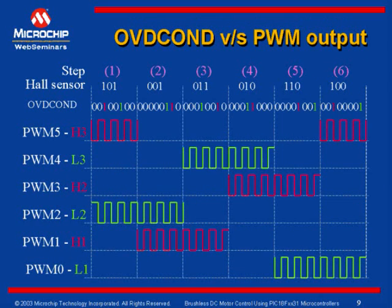Now let us see how PWM can control the motor, or how speed can be controlled using the PC-PWM module. The PC-PWM module has a feature of overriding the PWM outputs. Based on the value in a register called OVDCOND, or override control register, when the corresponding bit is set to 1, the PWM output becomes active, and vice versa — when the bit is set to 0, the PWM becomes inactive. With this, we can efficiently control the required PWMs to appear on the pin when required, as per the sequence, or inhibit them when not required.